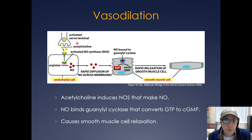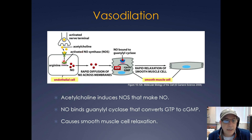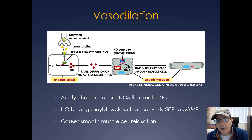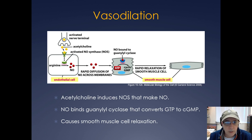Here's how vasodilation works: an activated nerve terminal releases acetylcholine, which binds to the acetylcholine receptor and signals activation of nitric oxide synthetase (NOS). NOS converts arginine to nitric oxide, a small gas that can rapidly diffuse across membranes. It then travels to a smooth muscle cell where it's bound by guanylyl cyclase. Guanylyl cyclase converts GTP into cyclic GMP, causing rapid relaxation of the smooth muscles and vasodilation. This is an important concept I'd like you to know well.